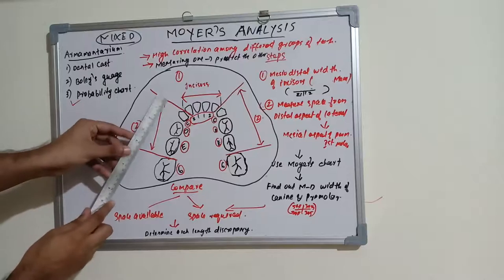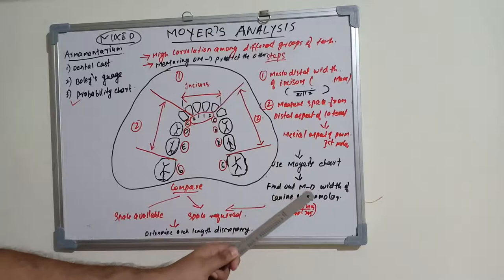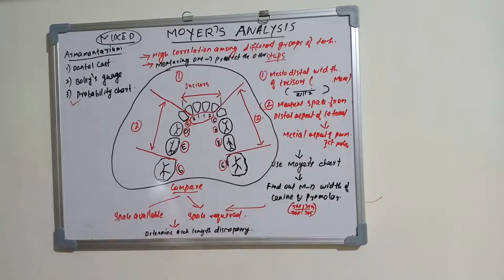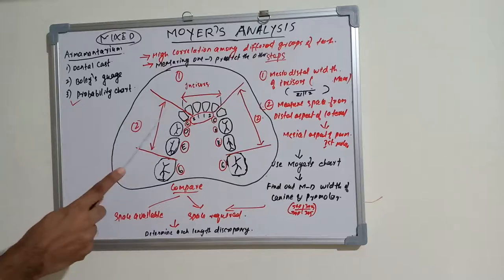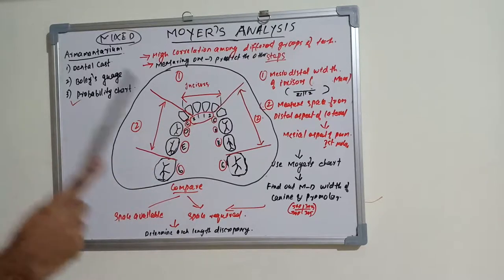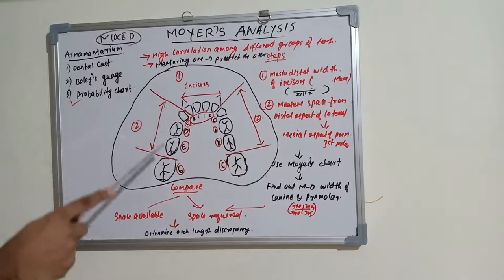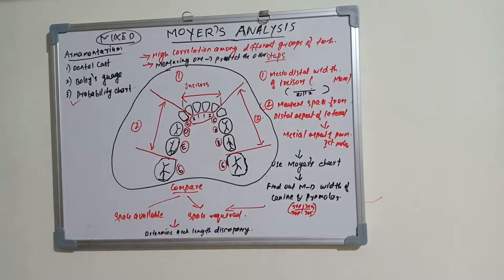The next step is to use Moyers chart — a probability chart — for a particular measurement to find out the mesiodistal width of the canine and premolars. This is the space where the future canine and premolars will be erupting, since the deciduous canine is replaced by the permanent canine and deciduous molars are replaced by premolars.